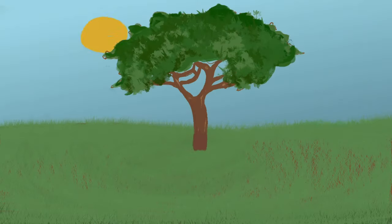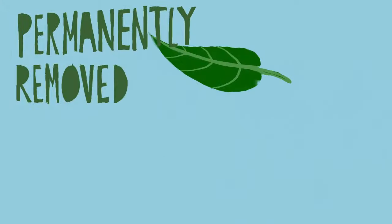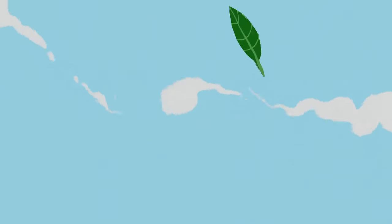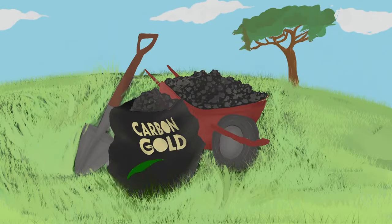One ton of carbon locked away in biochar is equivalent to three tons of carbon dioxide permanently removed from the atmosphere. So what is biochar? Carbon gold.